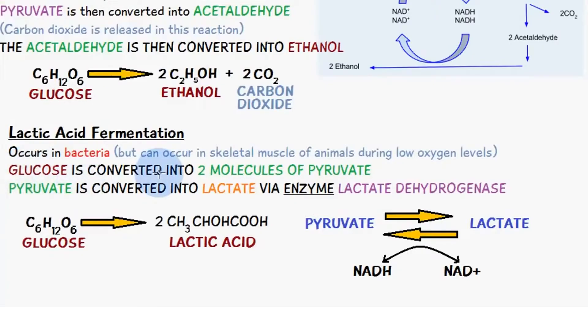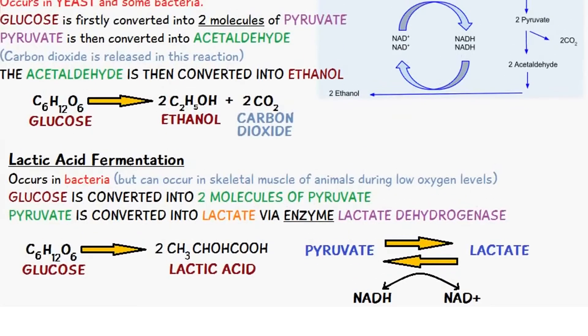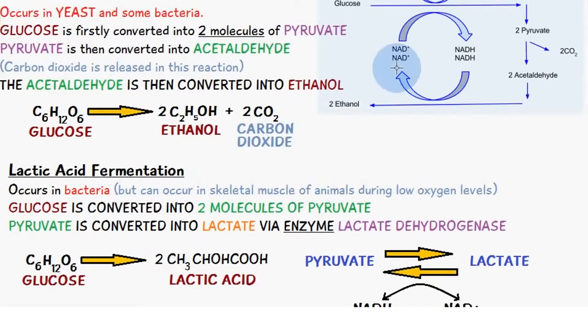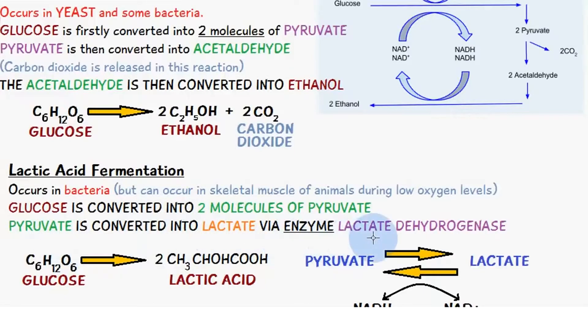Glucose is converted into two molecules of pyruvate — similar to this schematic diagram here. Pyruvate is then converted into lactate via the enzyme lactate dehydrogenase.